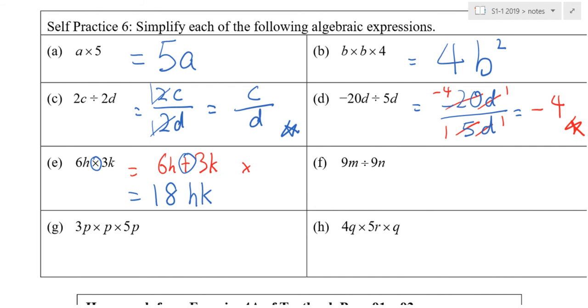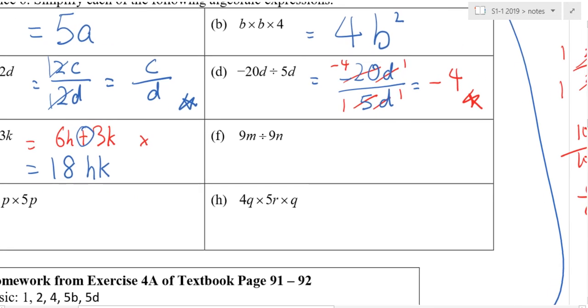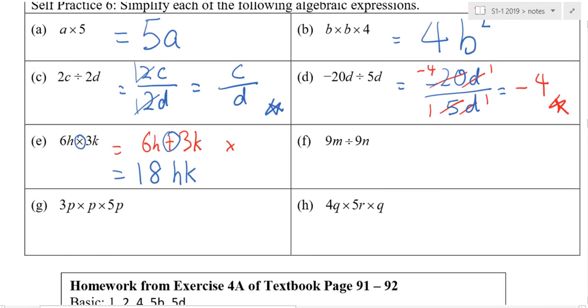Next one. Awkward already, yes. Madhya. 9M divided by 9N. What's the answer? 9M over 9N. 9M over 9N equals? M over N. Who don't agree? Okay. Next.